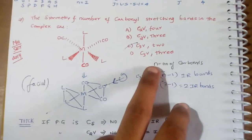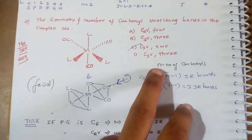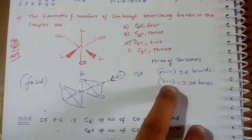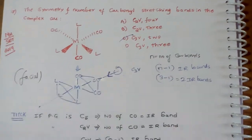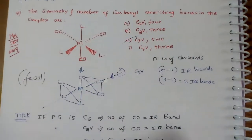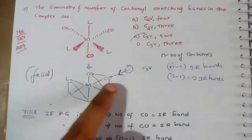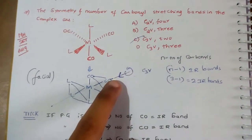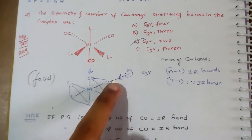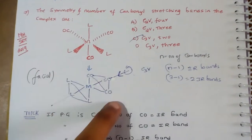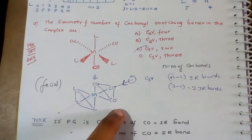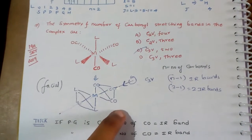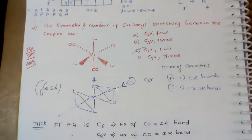Here, N means number of carbonyls. Three carbonyl groups are there. N-1 means we are having two IR bands. One CO is in a different environment — it gives one IR band — and two CO groups give another band. So therefore, two IR bands are there.